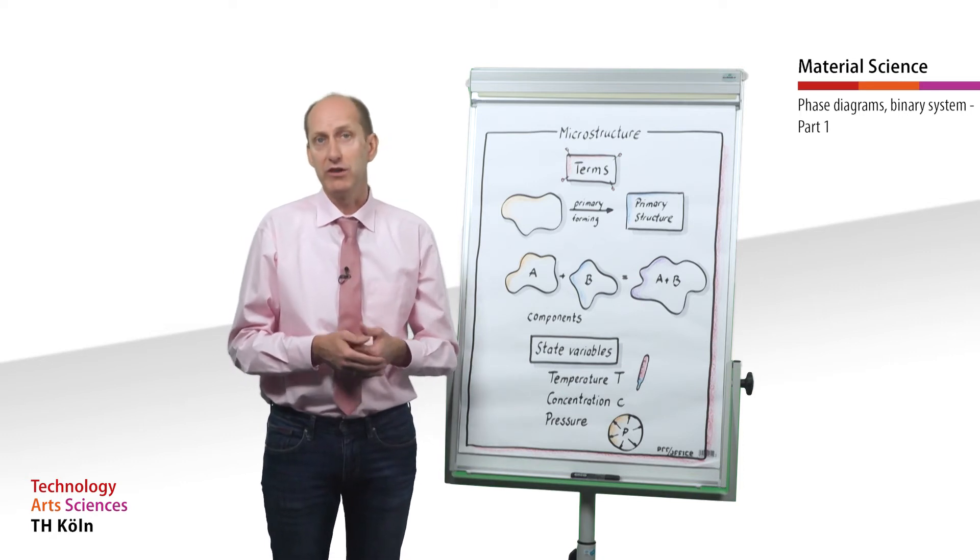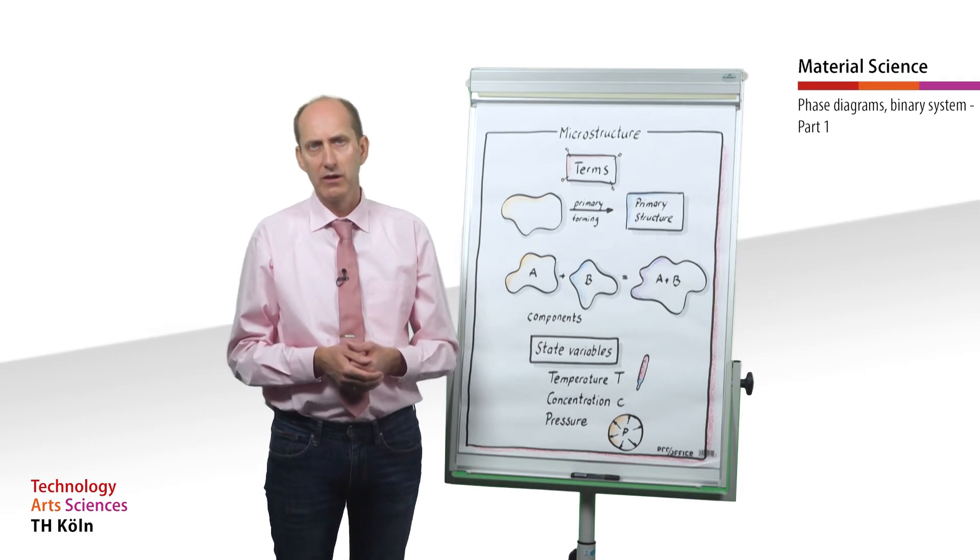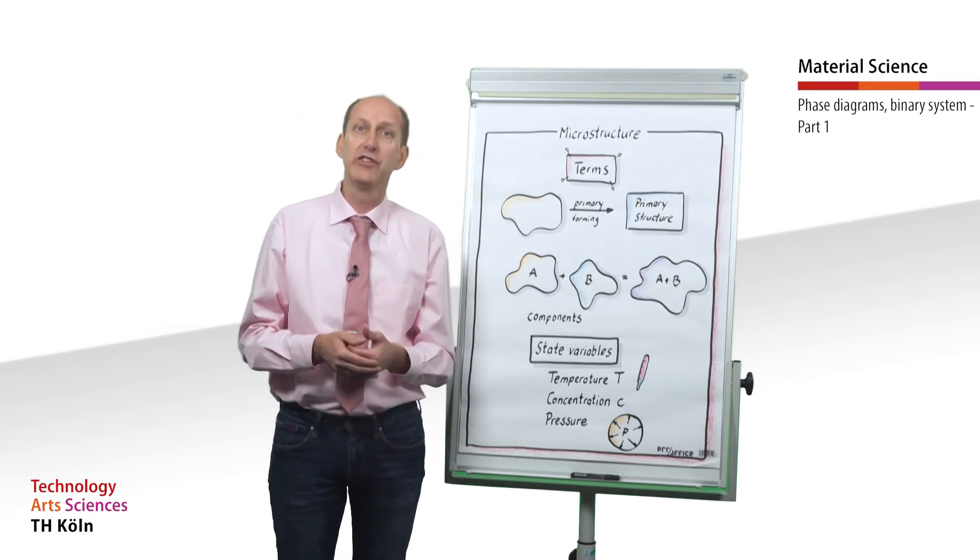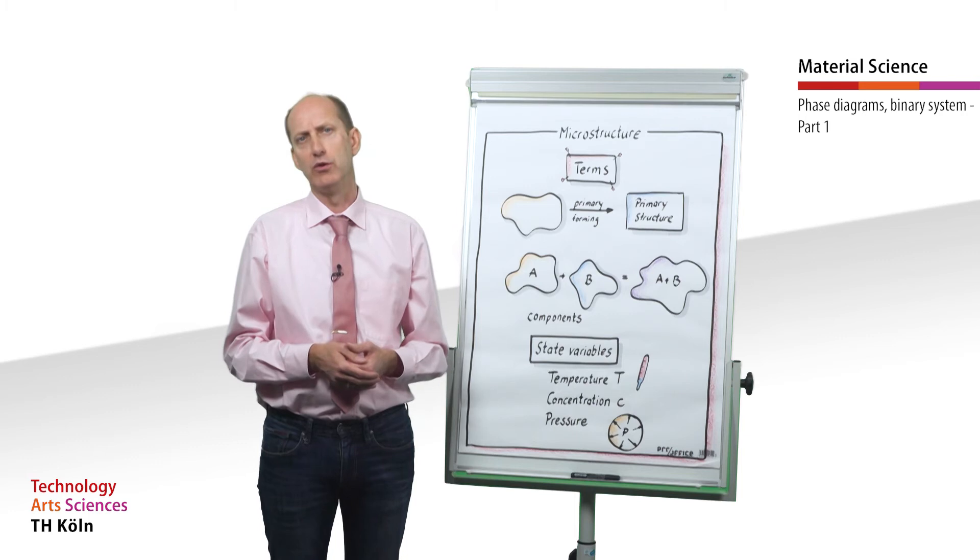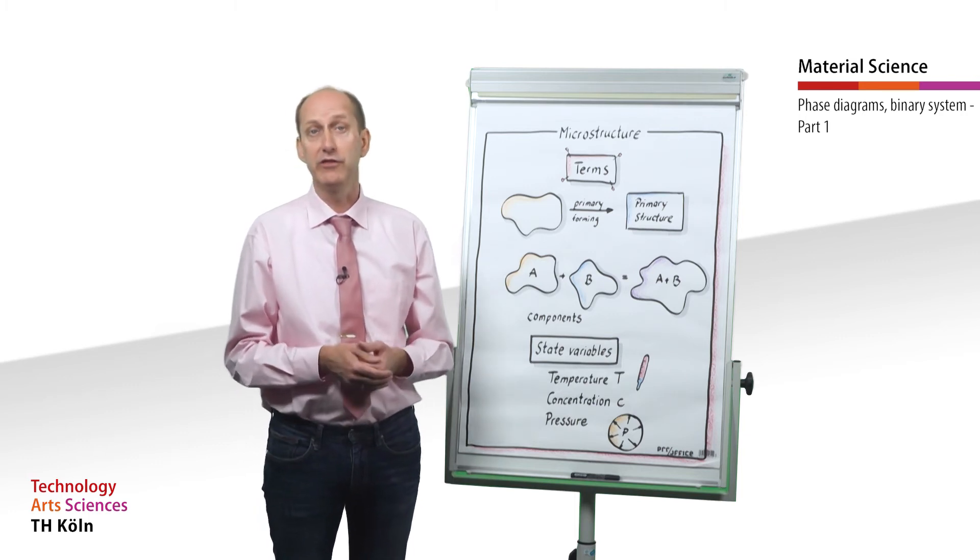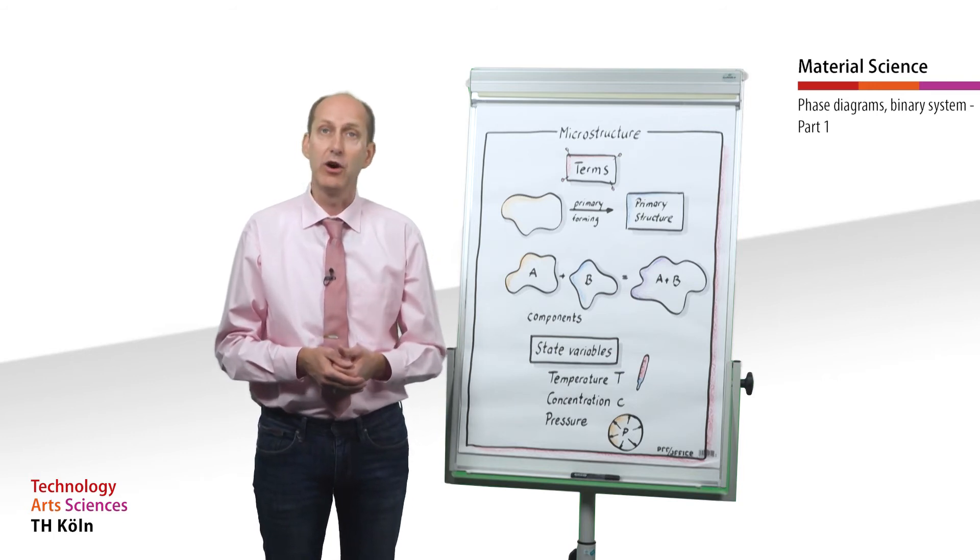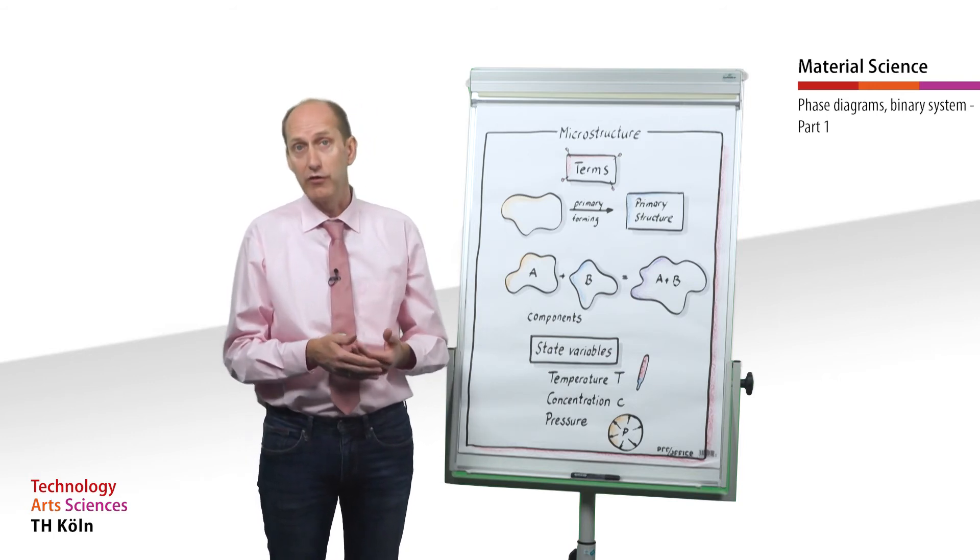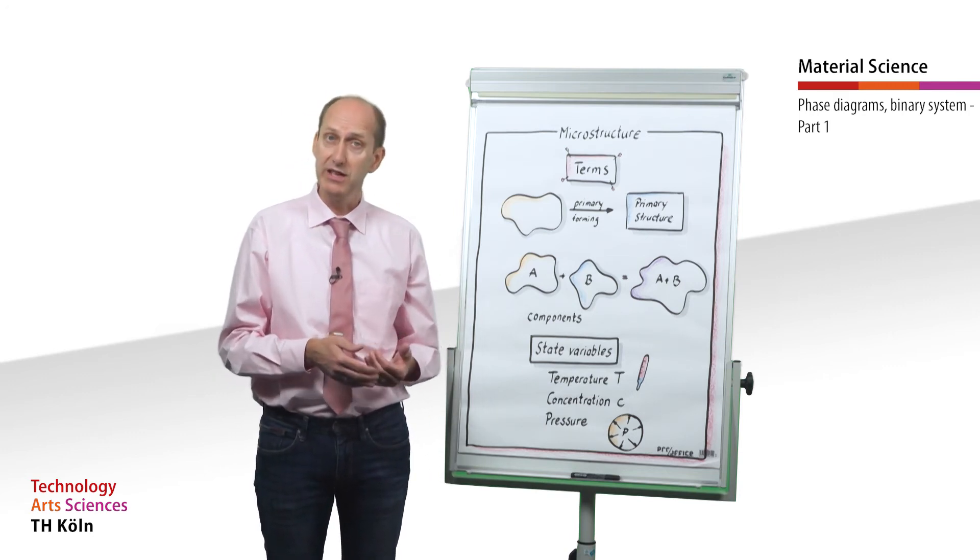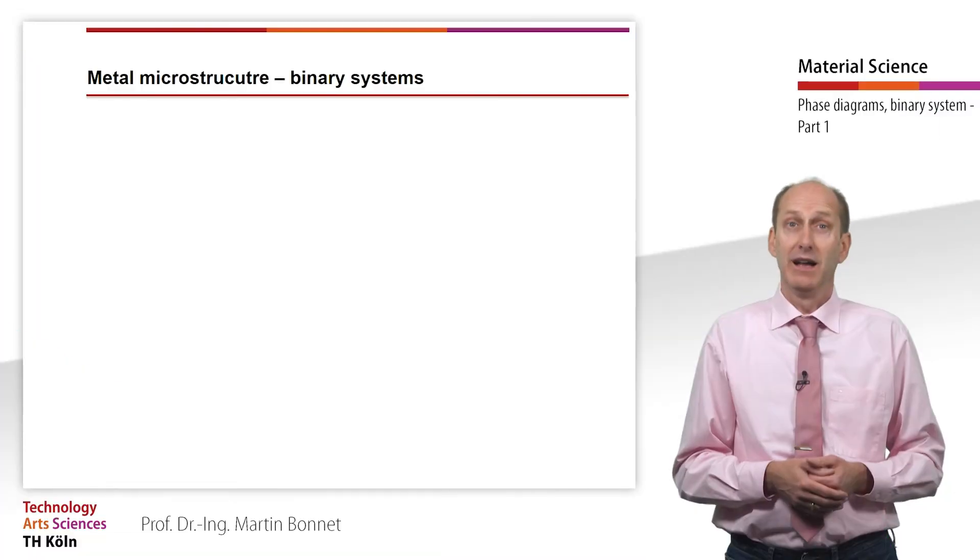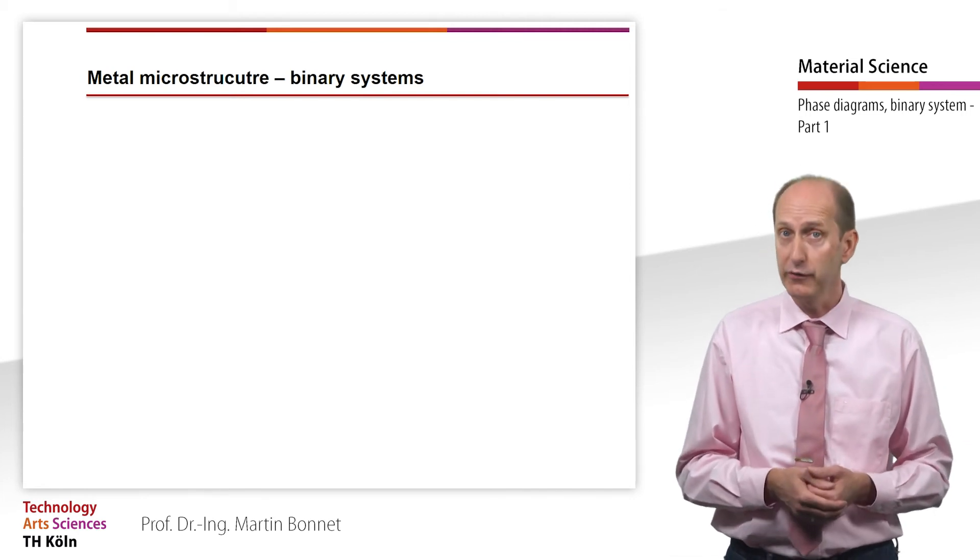If we consider an alloy consisting of two metals A and B, the phase diagram provides a complete overview of all possible phase transformations of the structure of all alloys consisting of A and an increasing content of B from 0 to 100% as a function of the temperature T and the concentration C. Let's take a look at four basic types of binary systems and their corresponding phase diagrams.